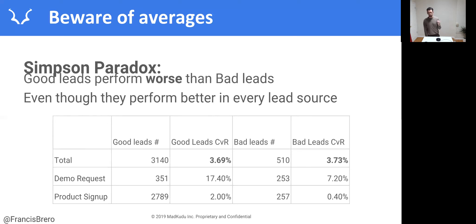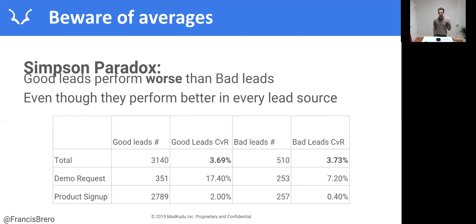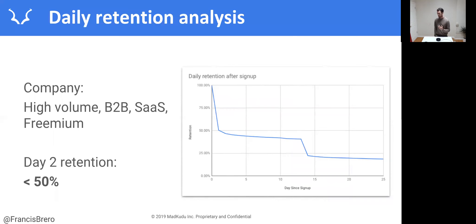This is a really important element, especially in freemium models where you'll have a distribution of leads skewed toward one lead source — generally product signups — which always have a lower conversion rate to pay than demo requests. If you look at things only at the average without breaking down by lead source, the conclusions you take from the data might be completely off. Let me walk you through a quick case study of a customer of ours where we found something similar.